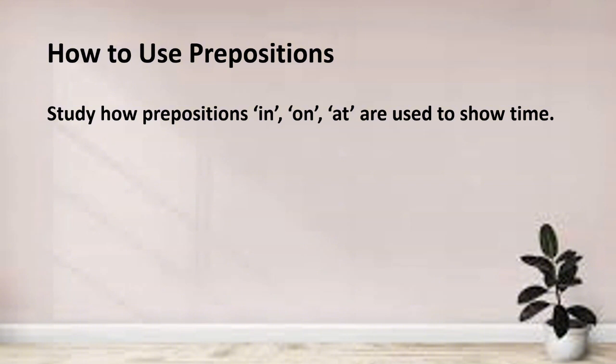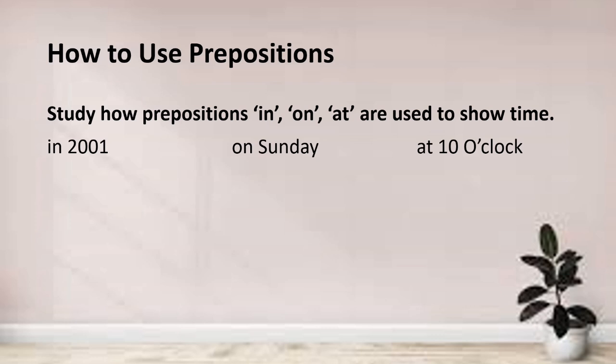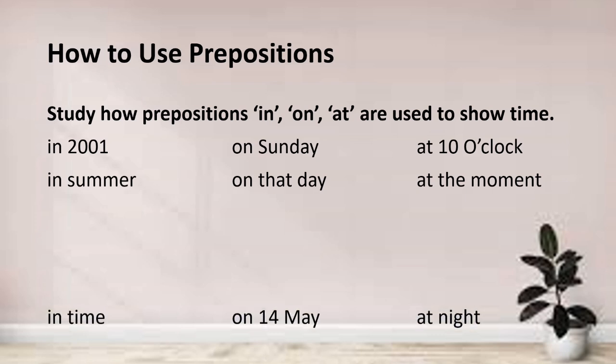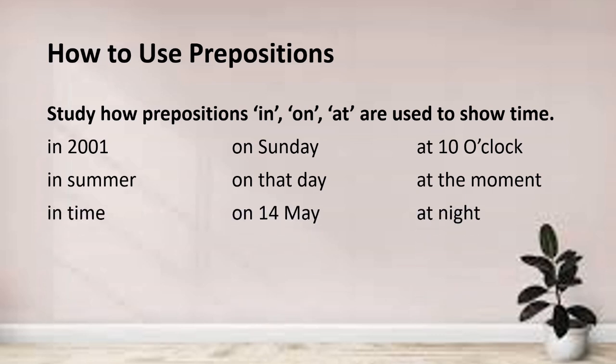Now I'll tell you about the use of prepositions. In, on, and at are used to show the position of something. For example: in 2001, on Sunday, at 10 o'clock, in summer, on that day, at the moment, in time, on 14th May, at night. Now you see how the prepositions in, on, and at are used in these phrases.